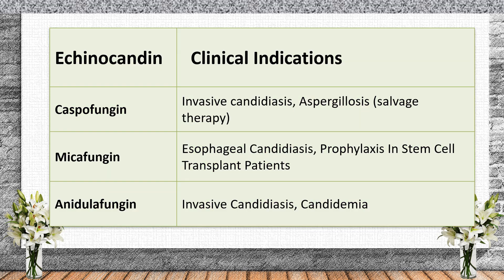Clinical uses of echinocandins: caspofungin is first-line for invasive candidiasis including candidemia, and is used as salvage therapy for invasive aspergillosis in patients who do not respond to voriconazole or amphotericin B. Micafungin is used for esophageal candidiasis and frequently for prophylaxis in hematopoietic stem cell transplant patients. Anidulafungin is effective for invasive candidiasis and candidemia, with a long half-life allowing once-daily dosing and improving patient compliance.